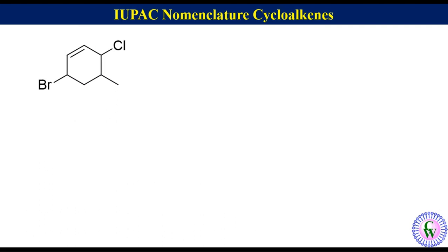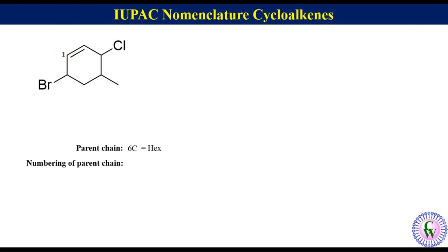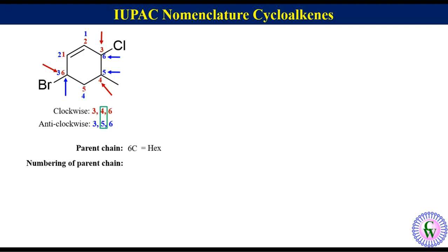Last example. In this molecule the parent chain is also a 6-carbon ring, so it will be named as hex. Carbons with the double bond get numbers 1 and 2. Clockwise numbering gives 1, 2, 3, 4, 5, and 6, and anti-clockwise also gives 1, 2, 3, 4, 5, and 6. There are 3 substituted carbons. Clockwise numbering gives 3, 4, and 6, while anti-clockwise gives 3, 5, and 6. This is the first point of difference, and clockwise gives the lower number, so clockwise numbering is the correct numbering.